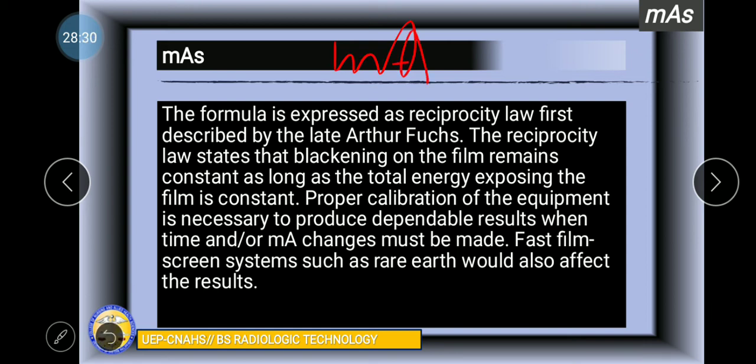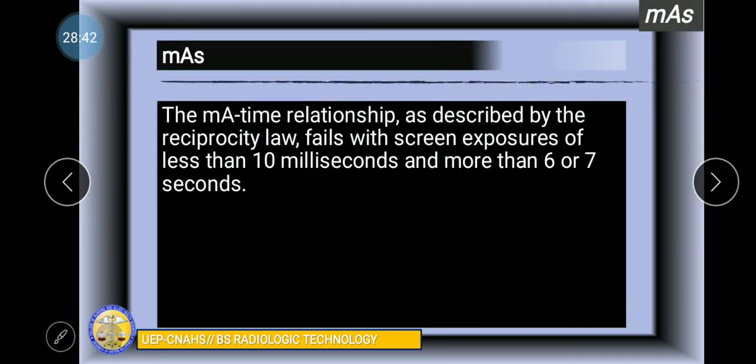Proper calibration of the equipment is necessary to produce dependable results when time or MA changes must be made. Fast film screen systems such as Rare Earth would also affect the result. Remember the reciprocity law: MA1 over MA2 is equal to exposure time 2 over exposure time 1.